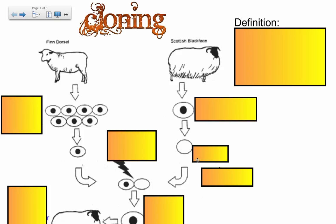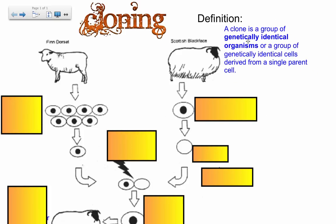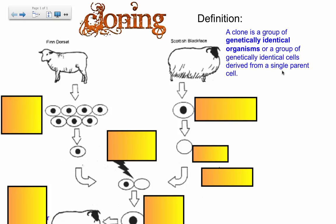Therapeutic cloning involves producing specific heart cells or pancreatic cells. A clone is a group of genetically identical organisms, or a group of genetically identical cells derived from a single parent cell. A genetically identical organism relates to reproductive cloning, while a group of genetically identical cells — like creating multiple heart cells, pancreatic cells, or lung tissue cells — relates to various types of therapies.